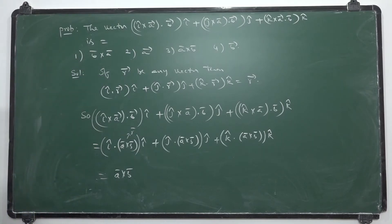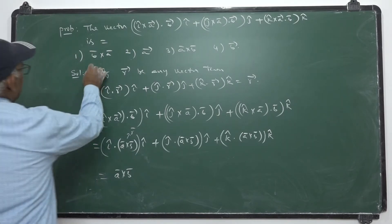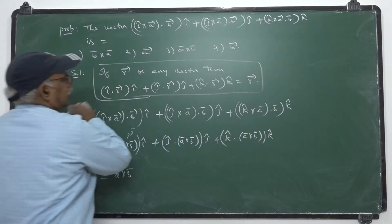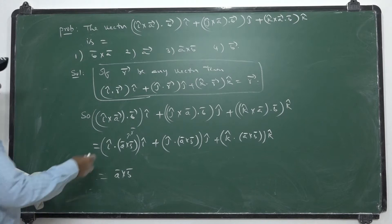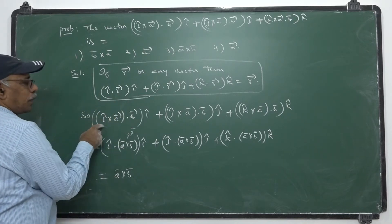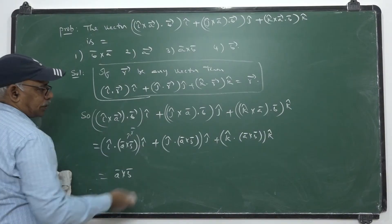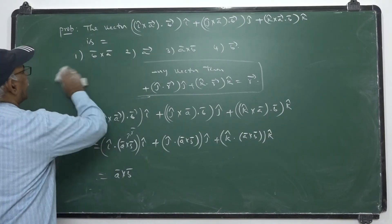That means the answer is ā × b̄. In scalar triple product you can interchange dot and cross. That is the overview. Of course this is scalar triple product — in scalar triple product you can interchange dot and cross.